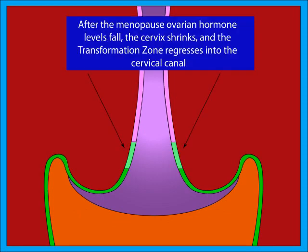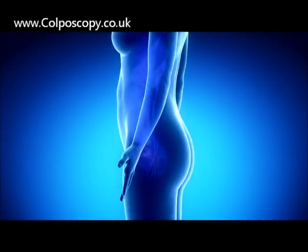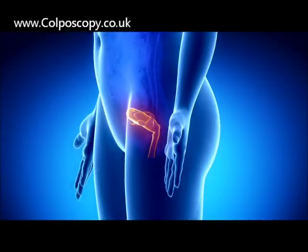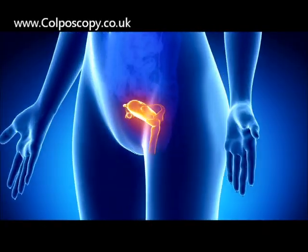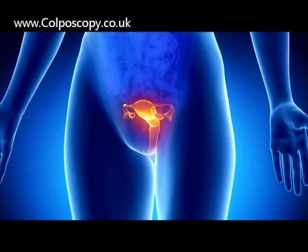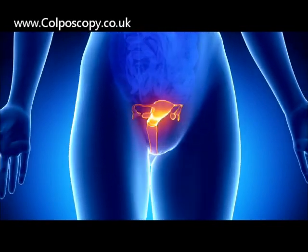After the menopause, ovarian hormone levels fall and the transformation zone regresses into the cervical canal. In our next videos, we'll learn about the causes of abnormal smears and what happens during a colposcopy.